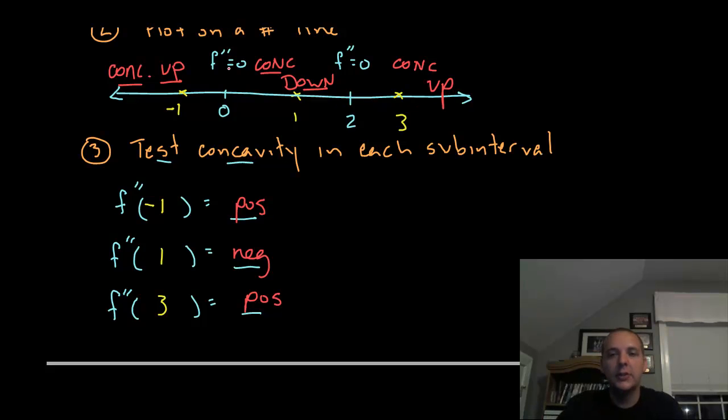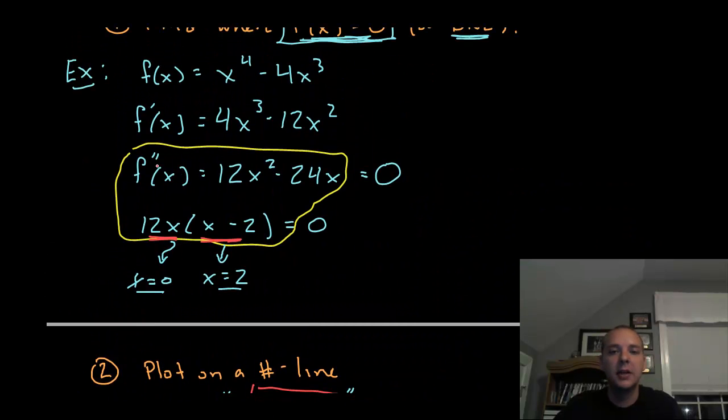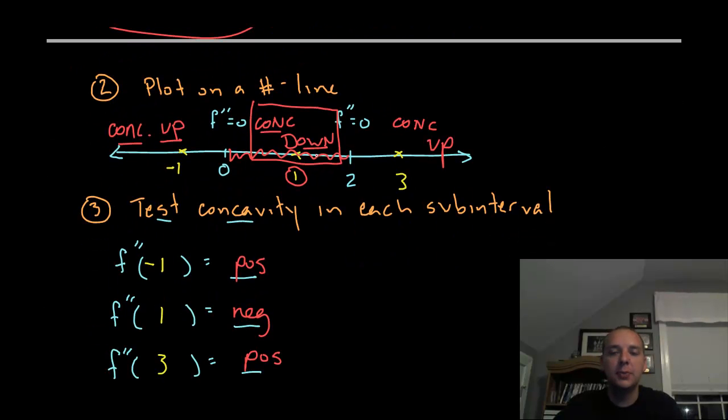In case you're concerned how one test point can be the definitive representation of the concavity inside the entire interval - if it ever switched, say it's concave down at 1, what about at 1.5? If it switched from concave down to concave up in that little interval, we would expect between one and 1.5 the second derivative to be zero somewhere. But we found all those places. There are no other places where the second derivative is zero other than these two places. So we can be sure that each test point is a true representative of the entire subinterval.